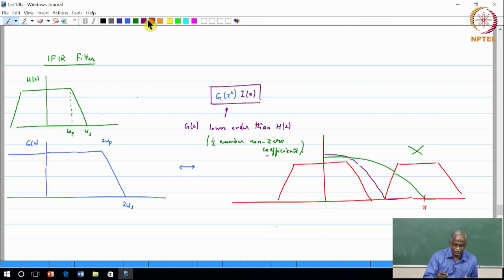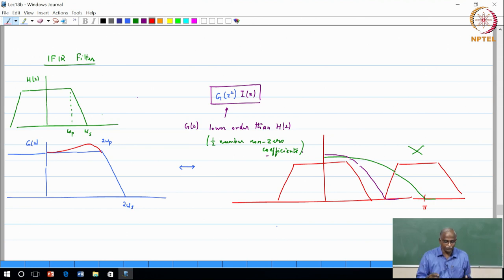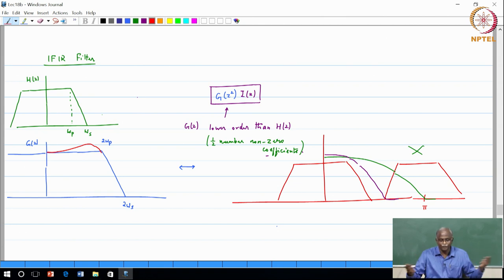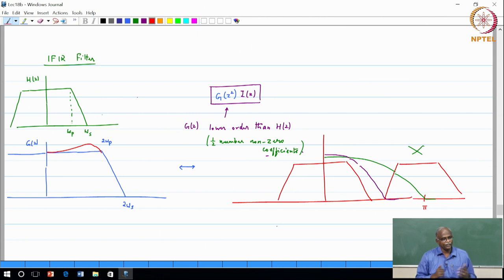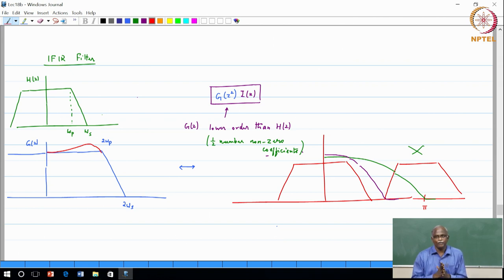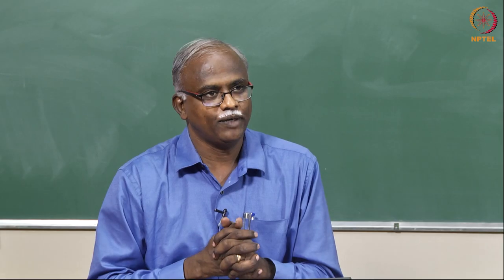To handle the passband droop, when specifying the magnitude response for the lowpass filter G(Z), you precompensate for the known droop — this is straightforward to incorporate using the Parks-McClellan method or any other FIR filter design method. So you specify the desired magnitude response accounting for the droop, and you can still take full advantage of the IFIR structure. We will stop here and pick up the two-channel maximally decimated filter bank in the next class.